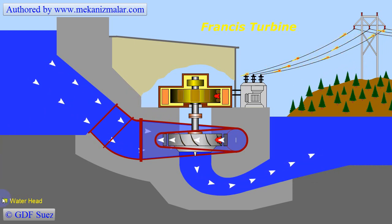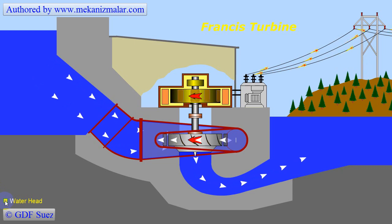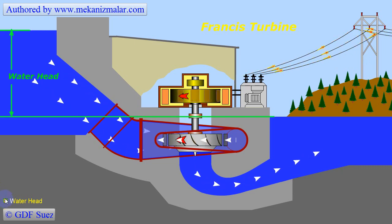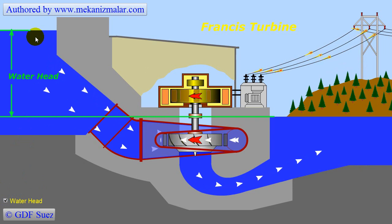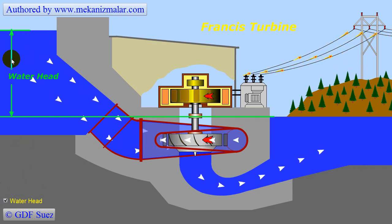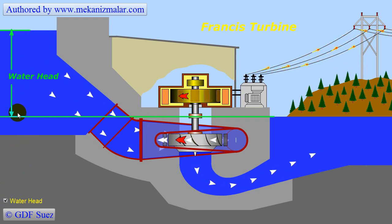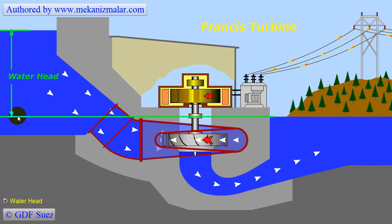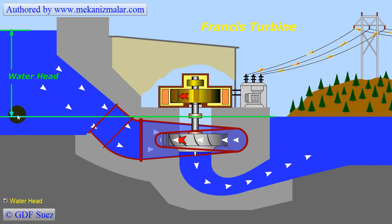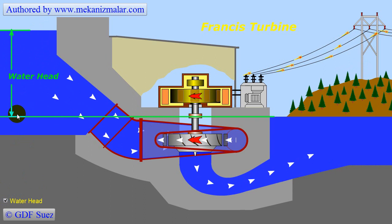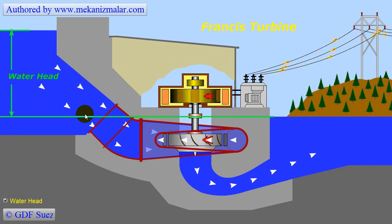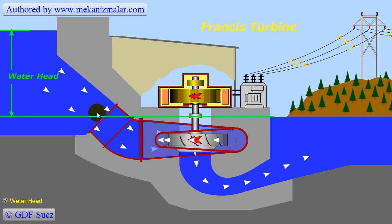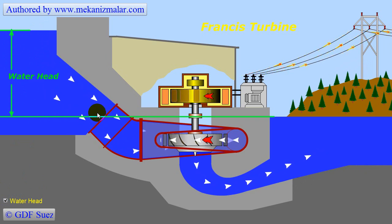There are three major types of water turbines. The Pelton turbine requires large water head and low flow rate, while the Kaplan turbine requires low water head but large flow rate. The Pelton turbines are usually built in mountainous regions, while the Kaplan turbines are located in lowlands. These restrictions make these two kinds of turbines less common than the Francis turbine.